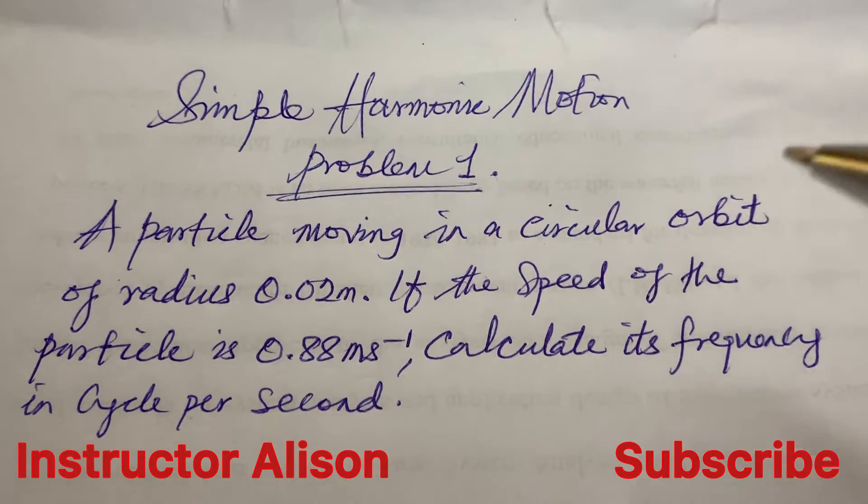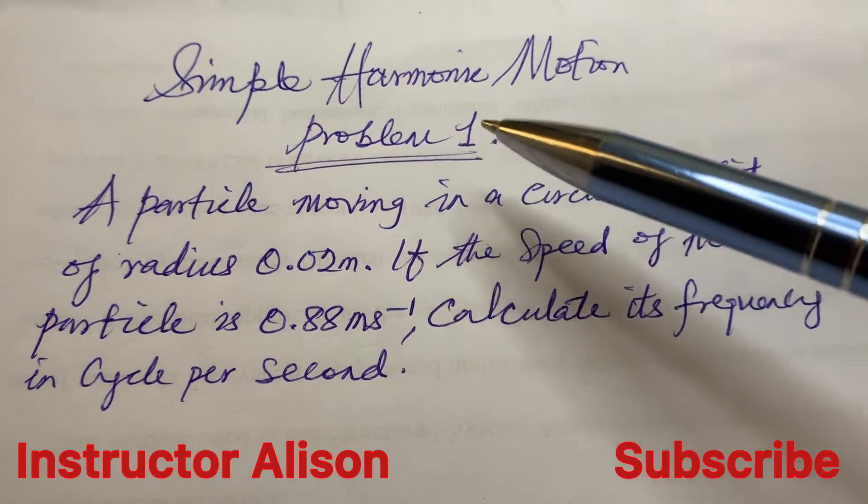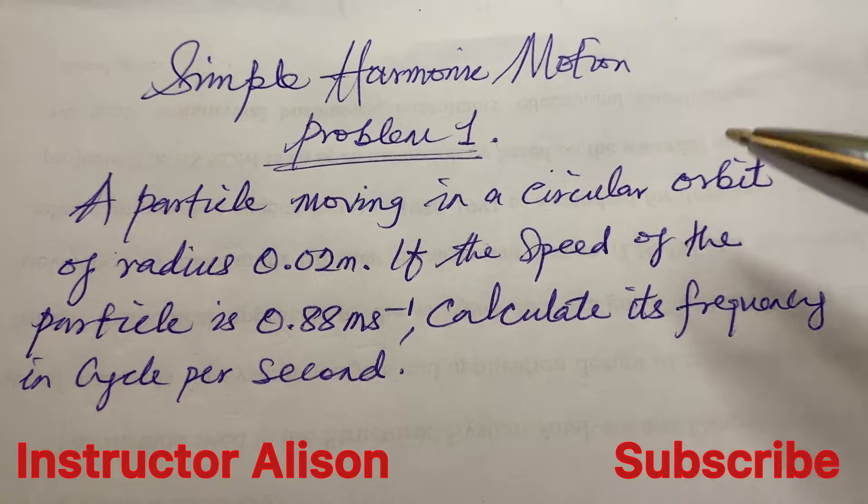Hi smart people and welcome to Instructor Alison online tutorials. In this video I want to show you how to solve a simple problem under Simple Harmonic Motion in physics. The question reads: a particle moving in a circular orbit of radius 0.02 meters.